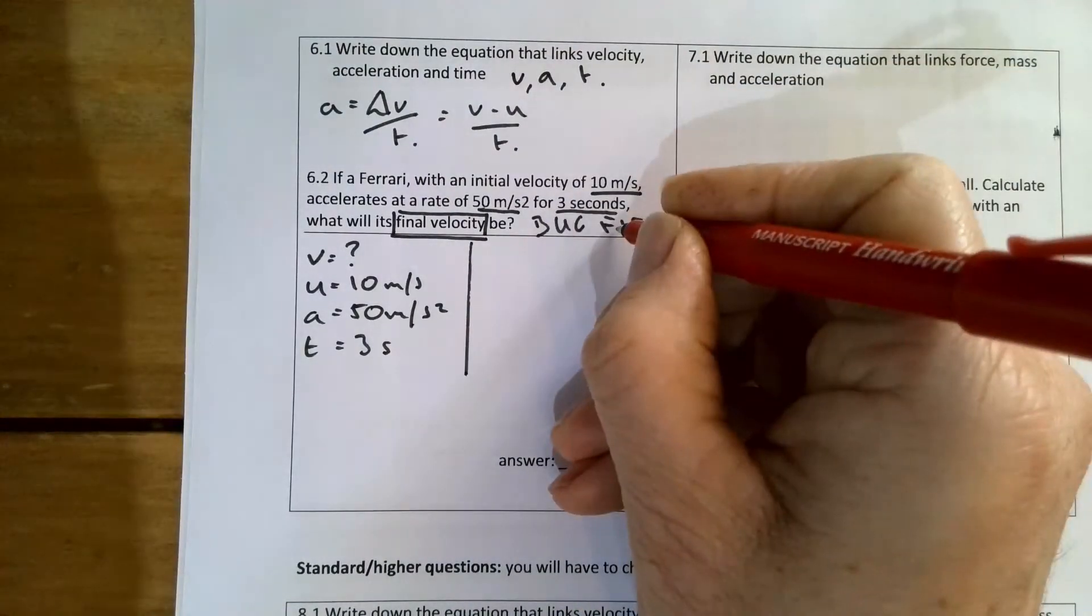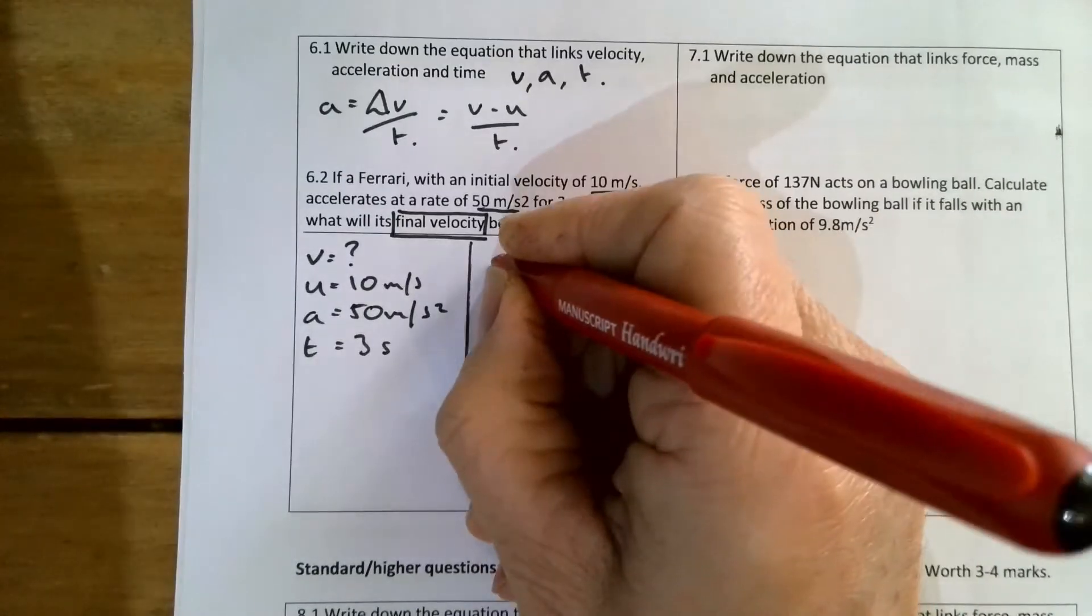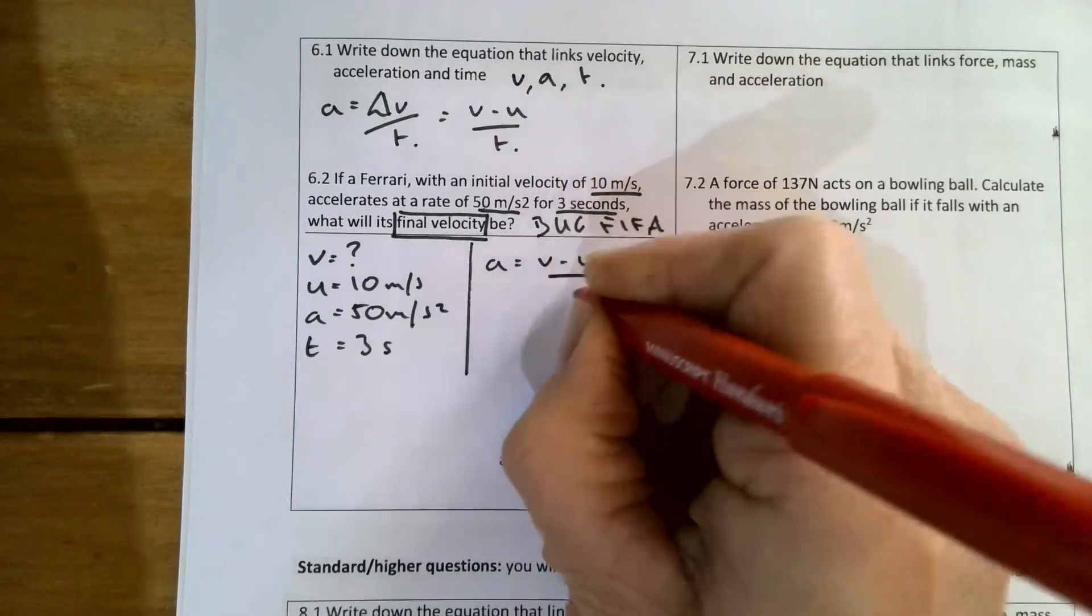I'm going to write out my formula. a equals v minus u over t.